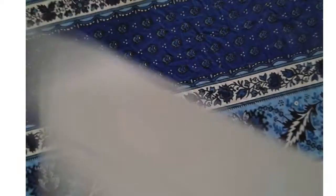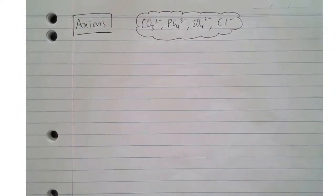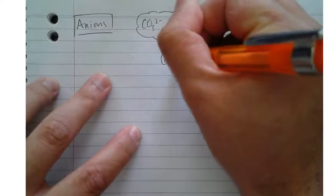Now let's have a look at our anions. So our anions are somewhat simpler, because we've only got a set of four to look at, so let's get into it. The first thing that we would do is add nitric acid.